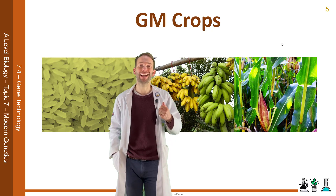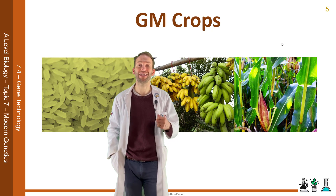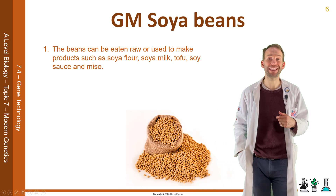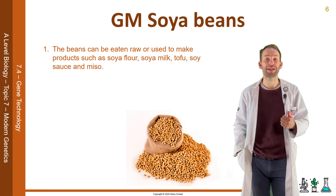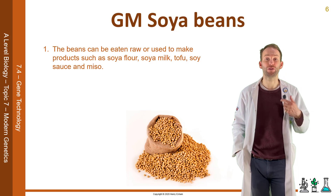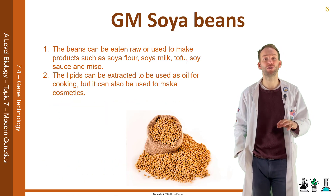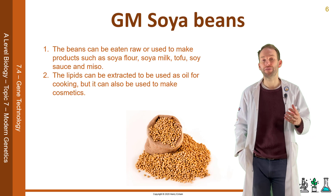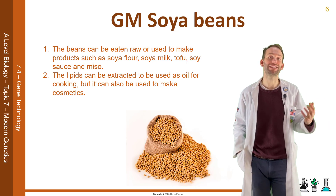The example we're going to look at is GM soybeans. Soybeans are the most widely cultivated legume in the whole world. They are high in protein and low in fat and have three main commercial uses. The beans can be eaten raw or used to make products such as soy flour, soy milk, tofu, soy sauce and miso. You can also extract the lipids for cooking oils and cosmetics. And then once you've taken the oils out, the remaining mass can be used as animal feed.